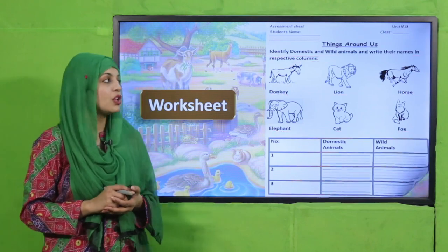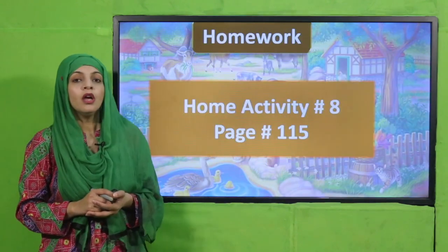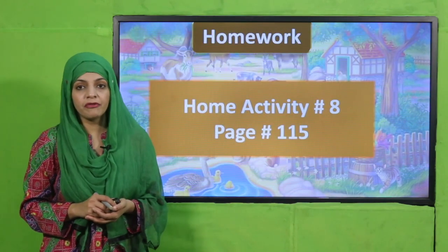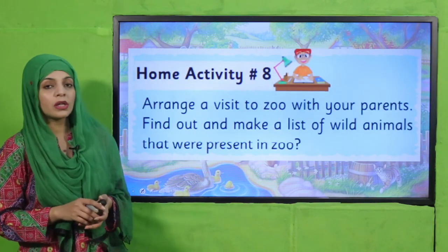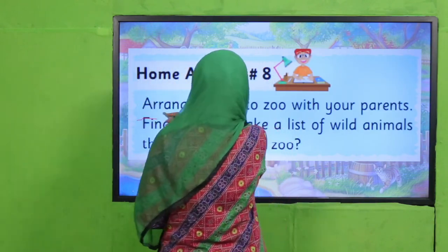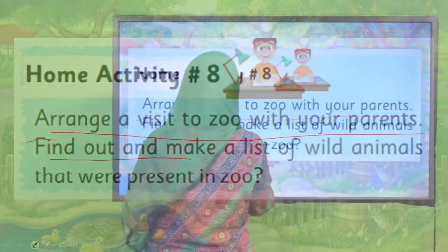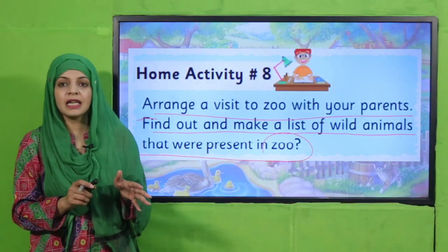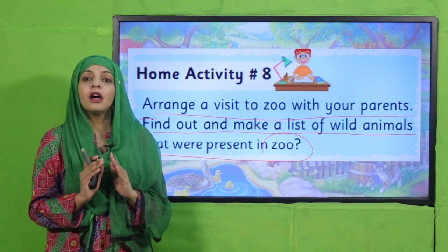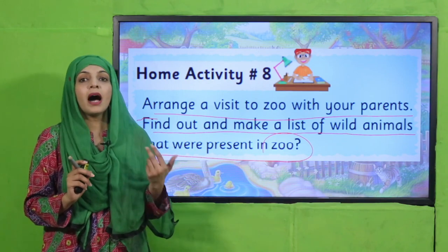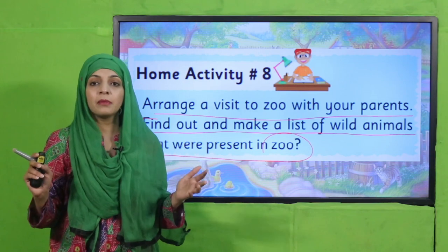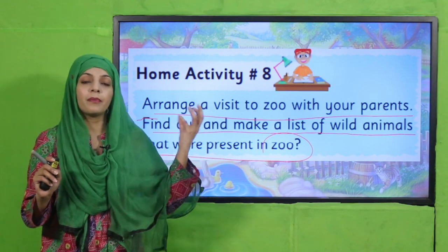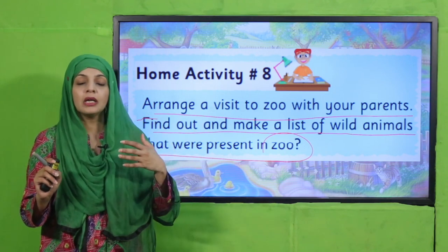I hope you have done it, so submit it to your teacher. For homework, you will do home activity number 8 on page 115. Students will arrange a visit to the zoo with their parents, observe the wild animals, and make a list of wild animals present in the zoo. The zoo management brings them from the jungle.